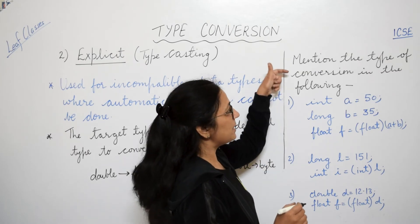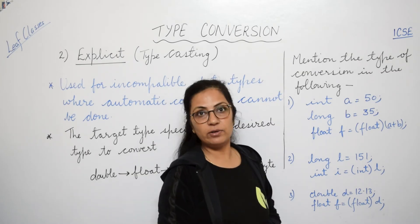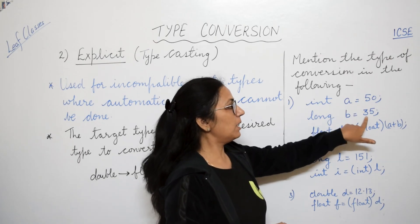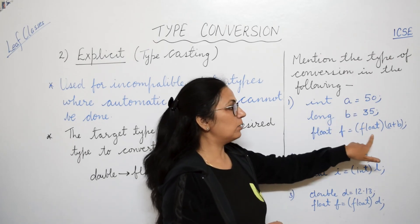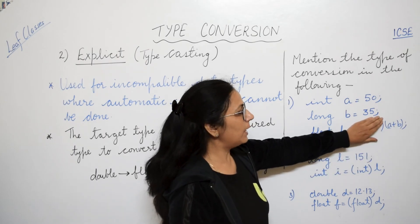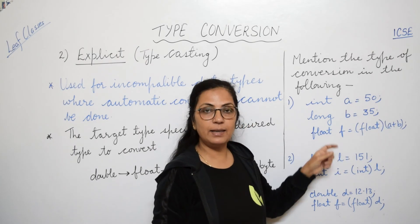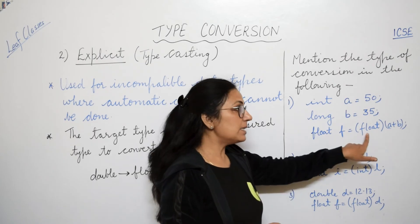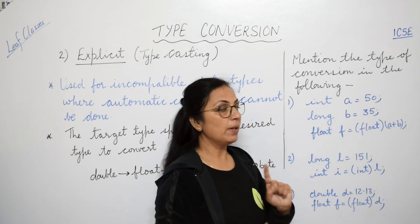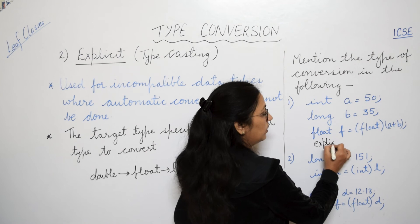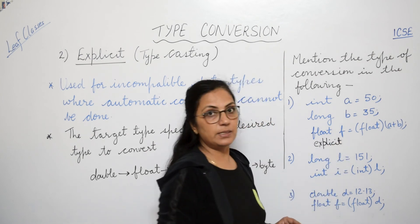The questions which can come in exams are like this. Mention the type of conversion in the following. Int a equals to 50, long b equals to 35, float f equals to float a plus b. Children, if we don't write float over here, then also it will be automatically converted into float type according to implicit conversion. But since float is mentioned here, so you will write the answer as explicit conversion.